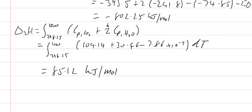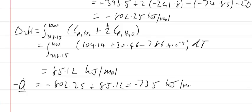When I add these things together, my heat loss per mole is equal to negative 802.25, step one, plus 85.12. So that means that we end up with an amount of heat being released of 735 kJ per mole. A lot of heat is released by this system.